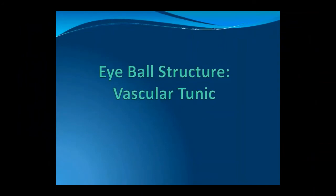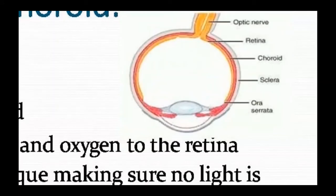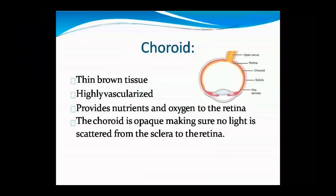The next eyeball structure is the vascular tunic, which is the choroid. This is a thin brown tissue that is highly vascularized with many blood vessels. It works to provide nutrients and oxygen to the retina. The choroid is an opaque structure so that light is not scattered — it is focused directly onto the retina. You can see the optic nerve, retina, choroid, and sclera in the diagram.